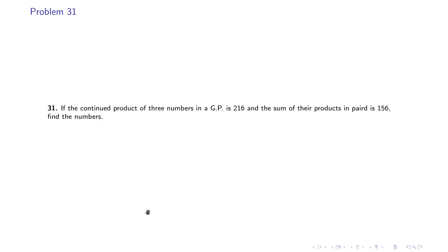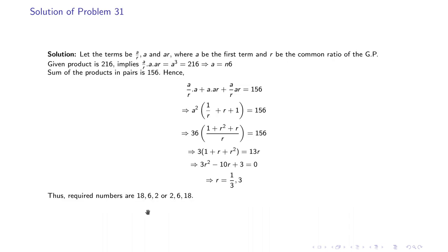Problem 31: if the continued product of three numbers in GP is 216, and the sum of their products in pairs is 156, find the numbers. We choose the numbers as A/R, A, and AR, where A is the first term and R is the common ratio of the GP. From the product condition, we get A = 6.